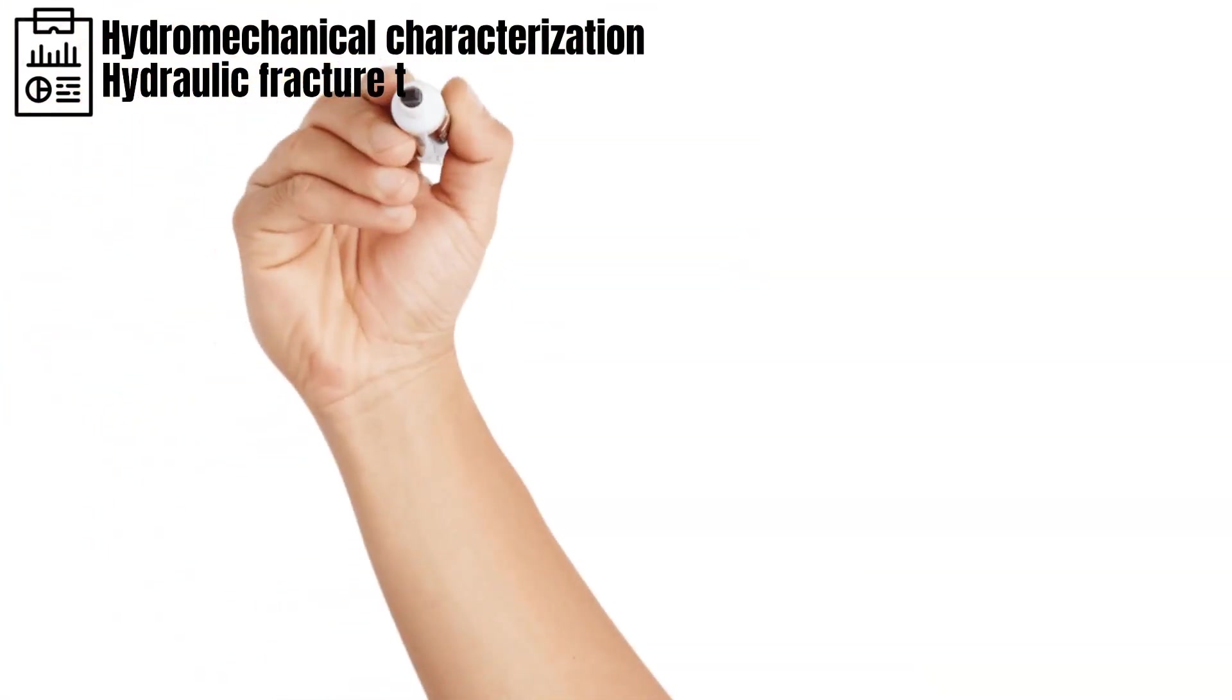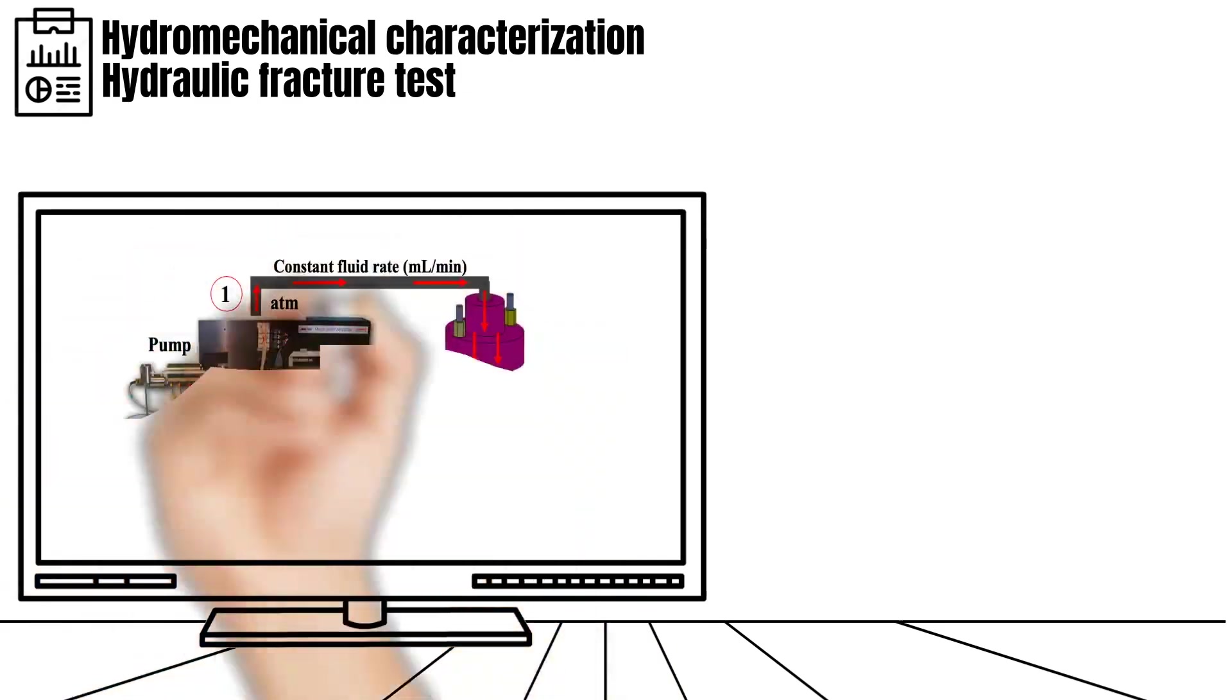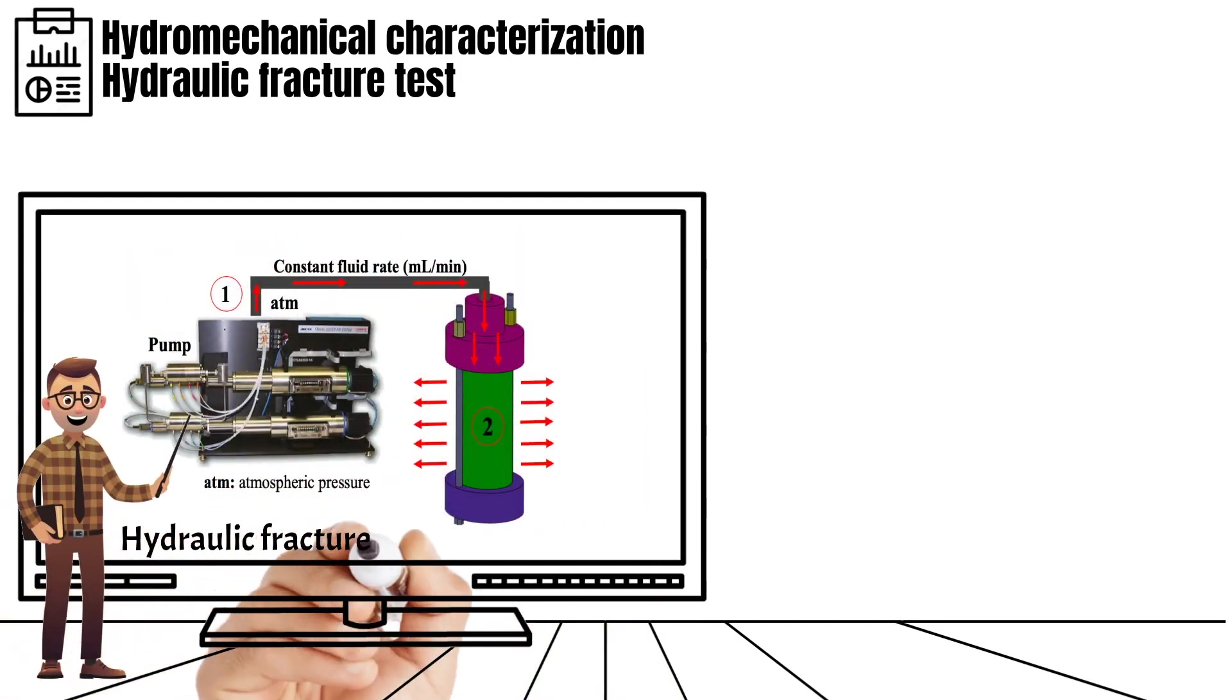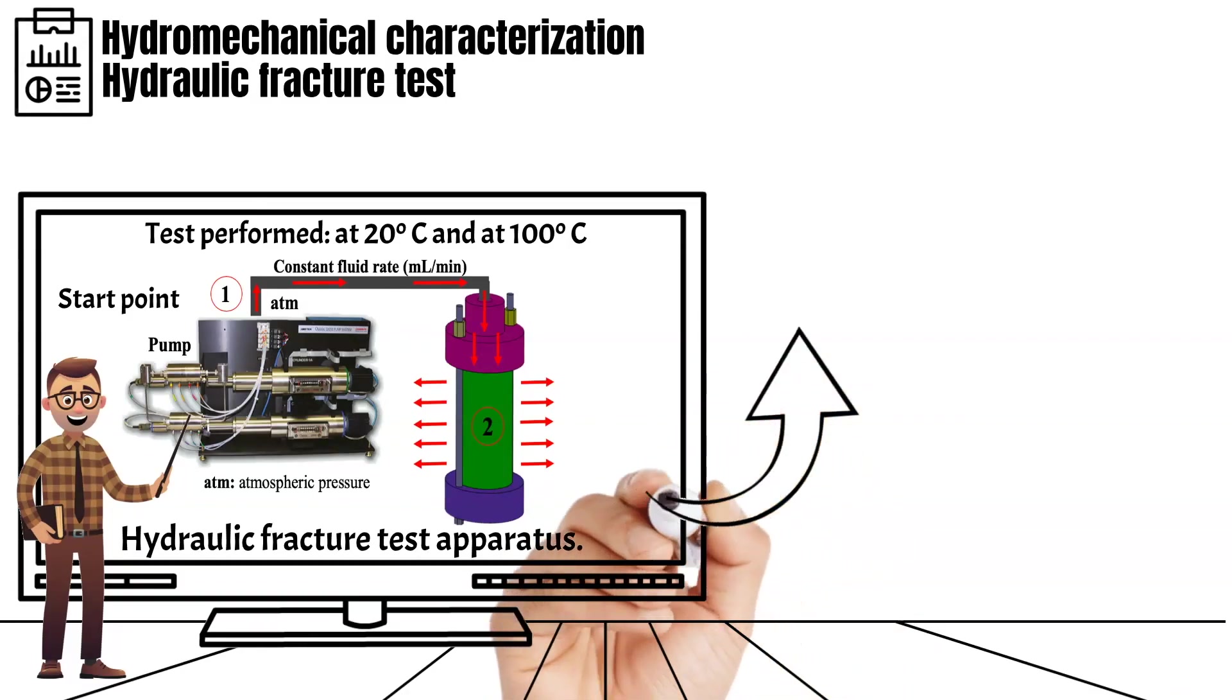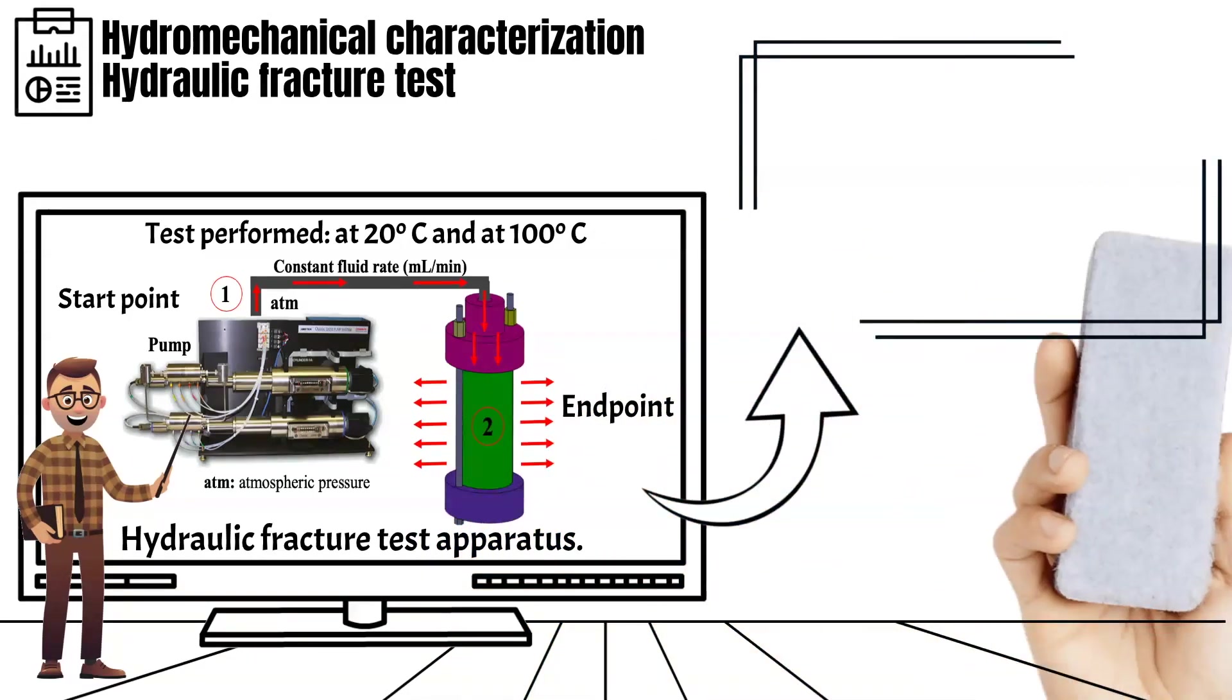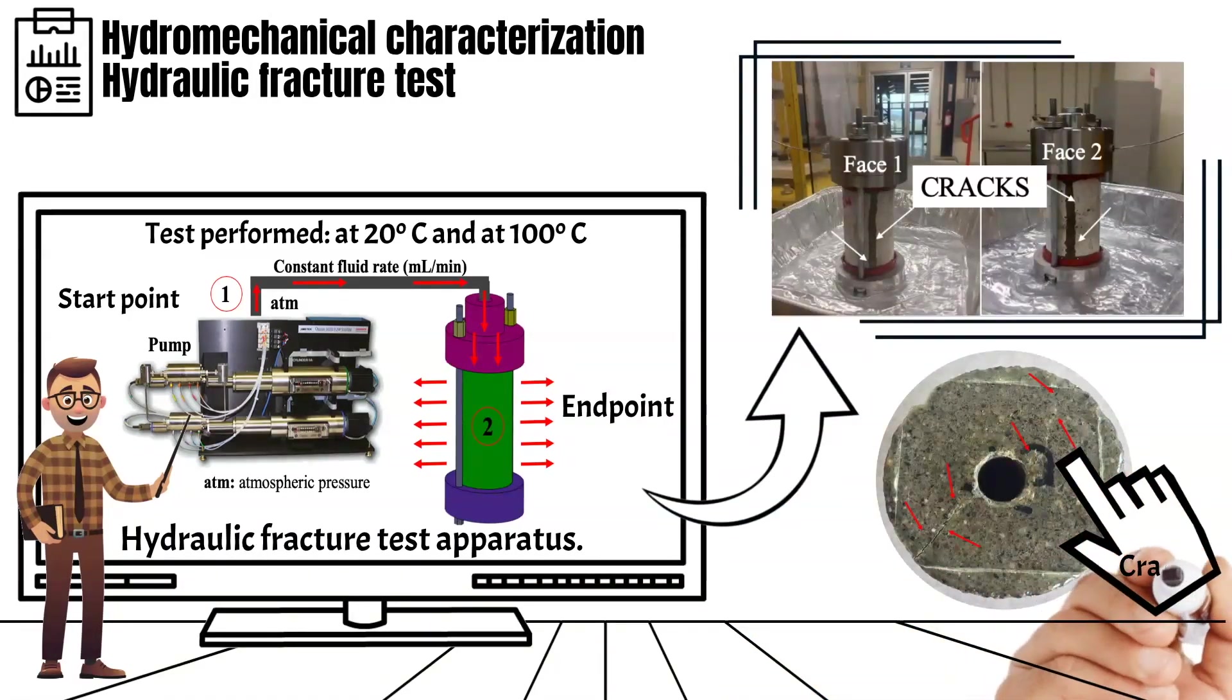We report here the use of methods based on an energy balance during hydraulic fracture tests. The test consisted in applying a constant fluid flow rate of oil to the mortar and rock sample at 20 and 100 degrees Celsius after the permeability test.